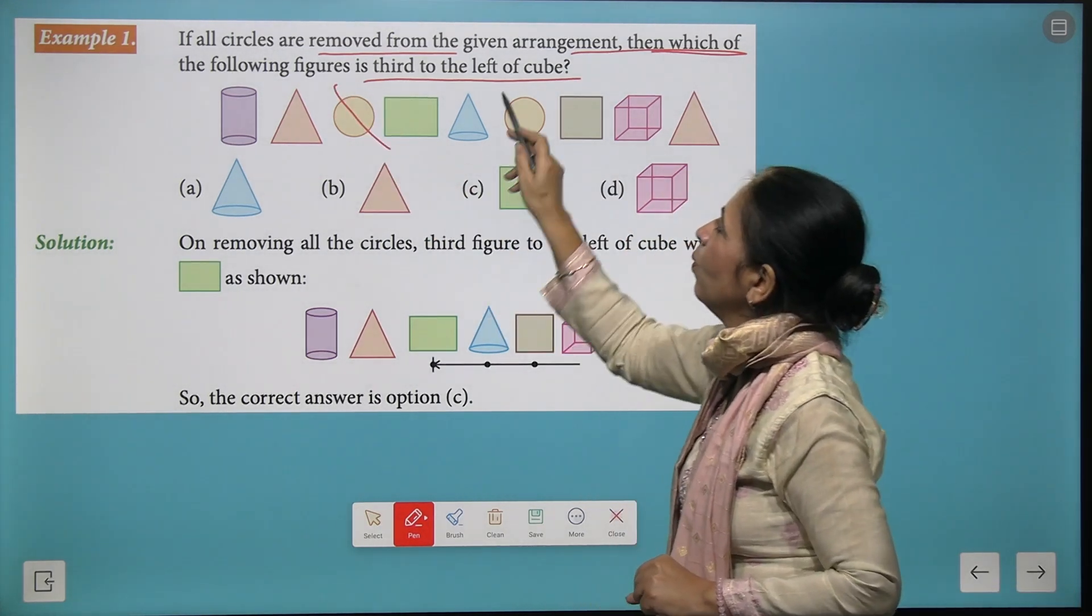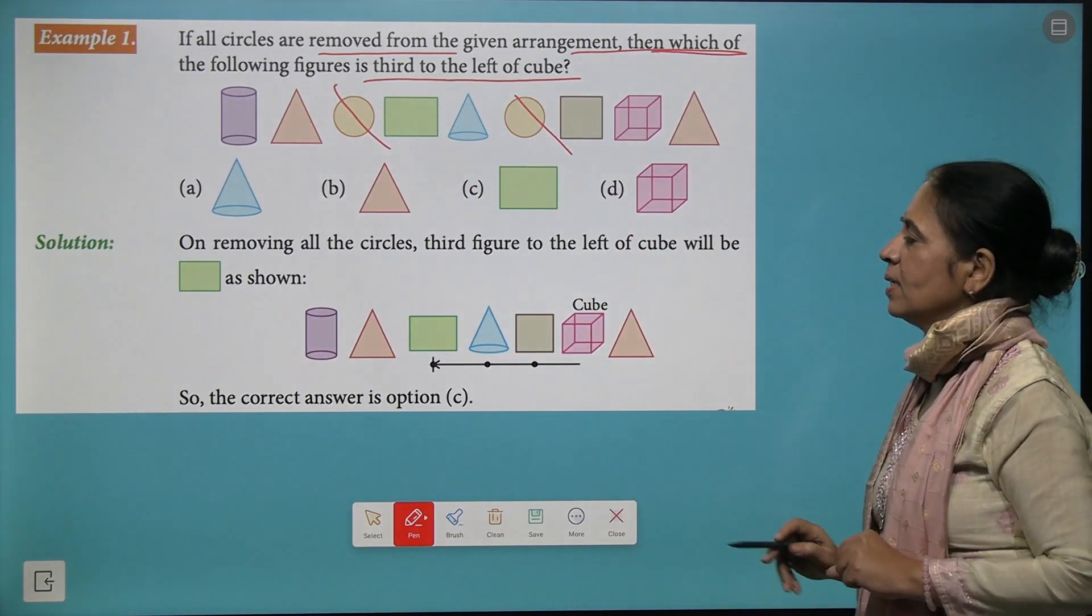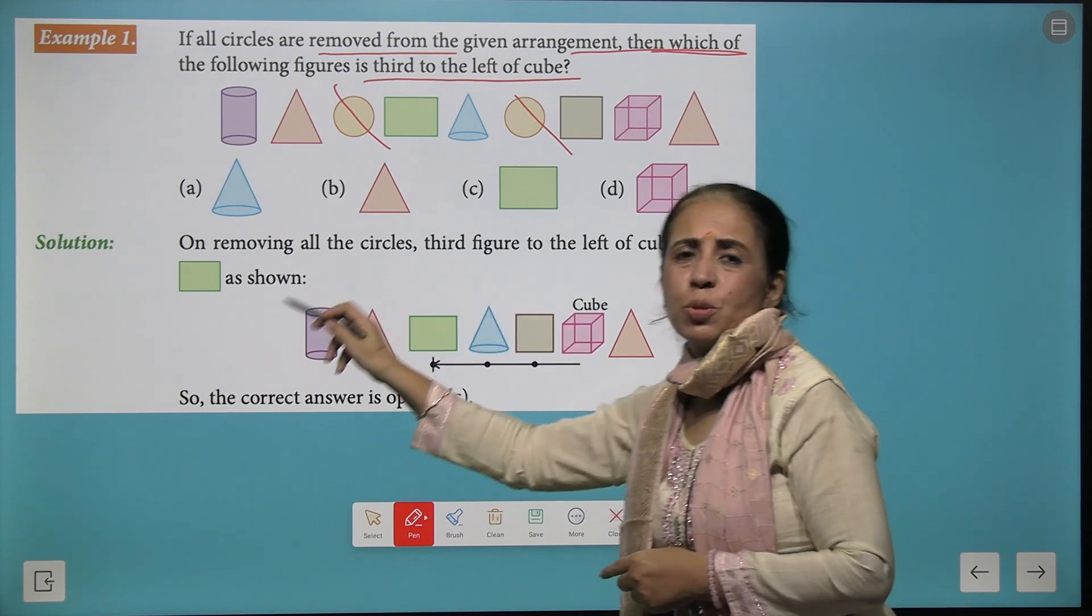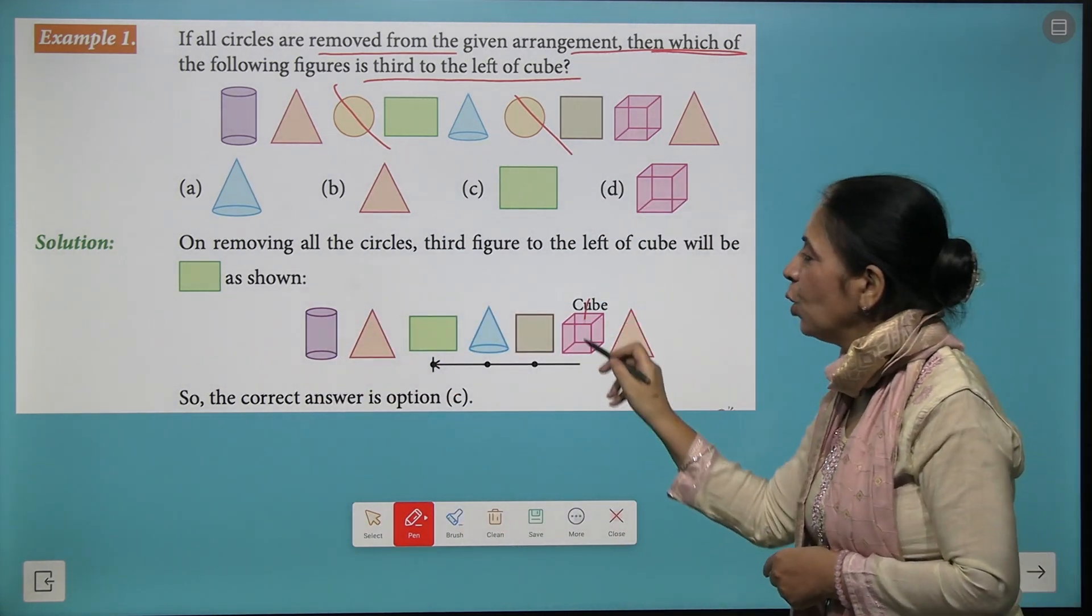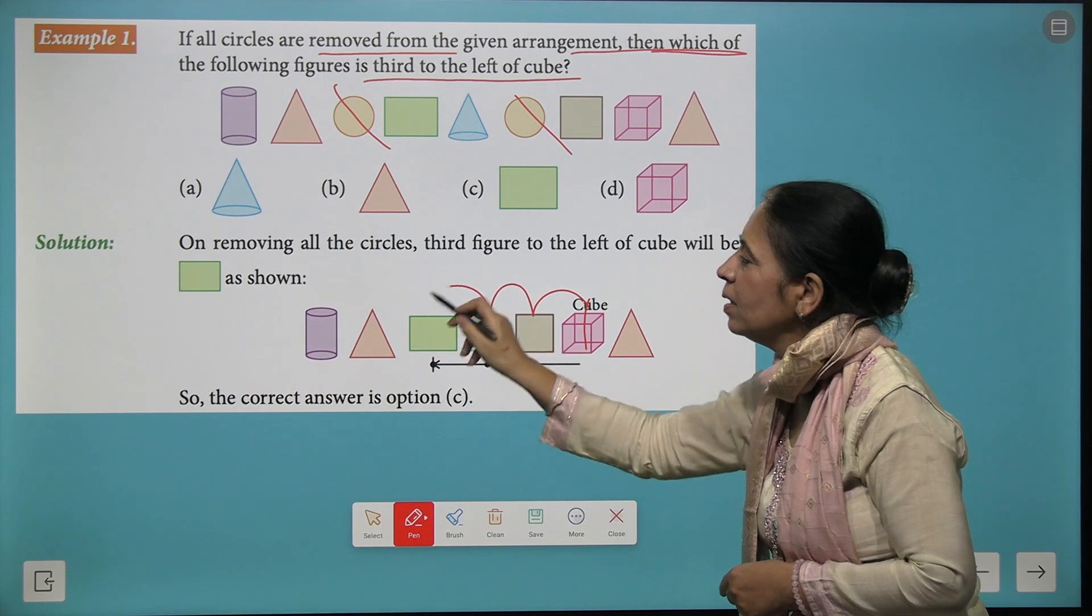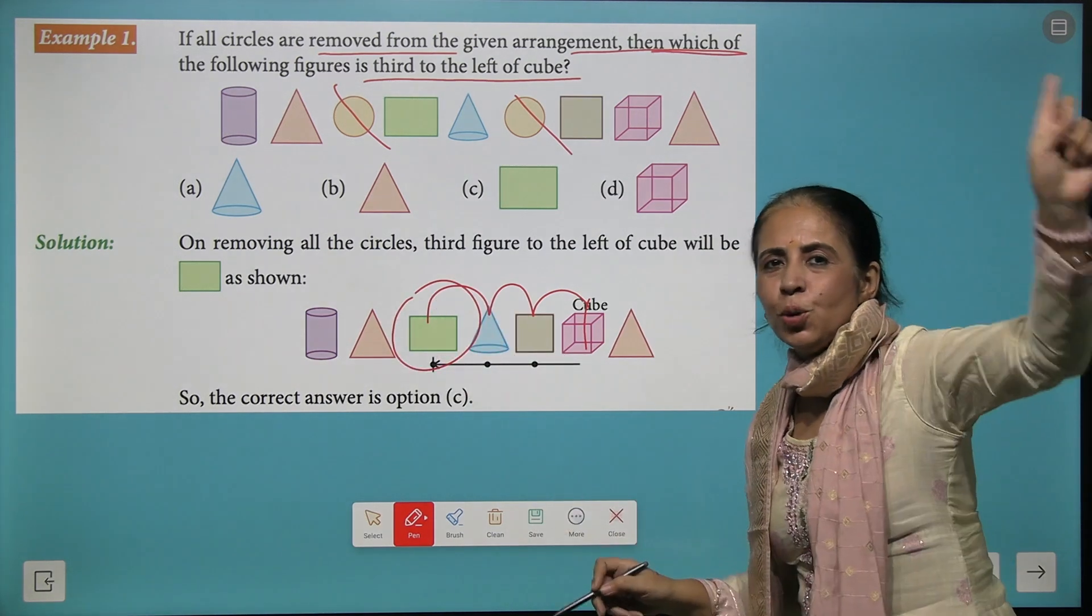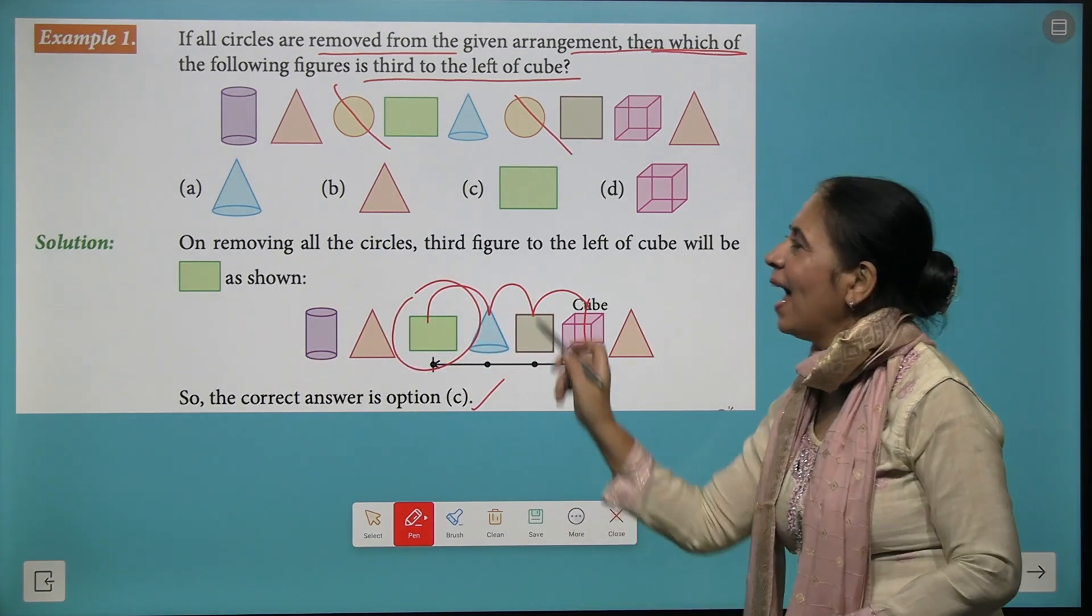First thing you have to do is remove all the circles. After this we get the arrangement like this. From the cube, you have to find the third figure. Yay, shout out for a rectangle, and C becomes the right answer.